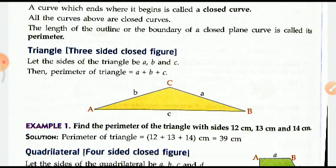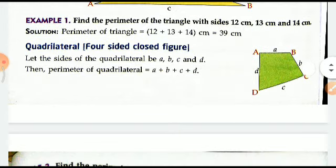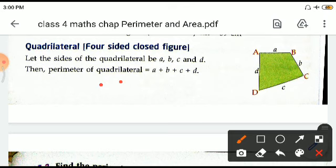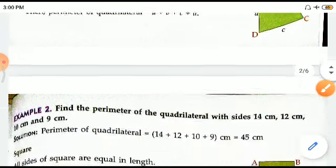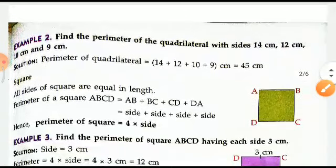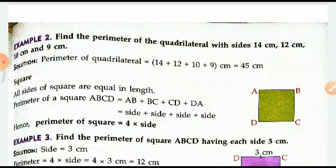See this example here. The length of the sides are 12, 13, and 14, so the perimeter is the sum total of them which is 39. Quadrilateral is a four-sided figure, so its perimeter will be the sum of all the four sides. See 14, 12, 10, and 9 centimeters are the sides, so the perimeter is 45 centimeters.